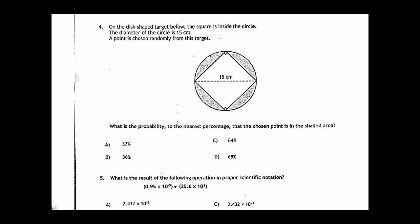Question 4: On the disk-shaped target below, the square is inside the circle. The diameter of the circle is 15 cm. A point is chosen randomly from this target. What is the probability, to the nearest percentage, that the chosen point is in the shaded area? Here, probability of being in shaded equals area wanted, the wanted area, which is area shaded, divided by the total area. The entire shape is a circle, so area circle.